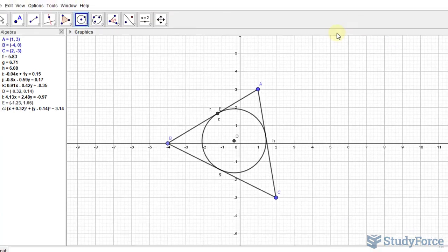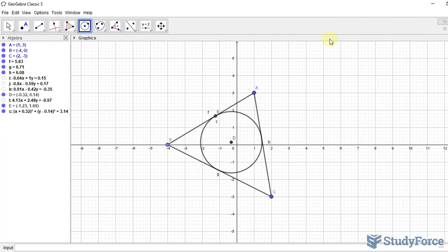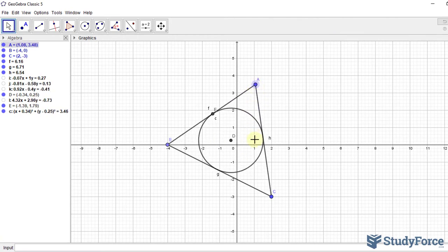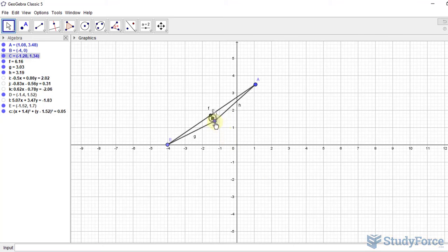And we have created an in-circle within this triangle. And notice how it behaves. It is dynamic. As I move any one of these vertices, that circle will remain within the triangle and never pop out.